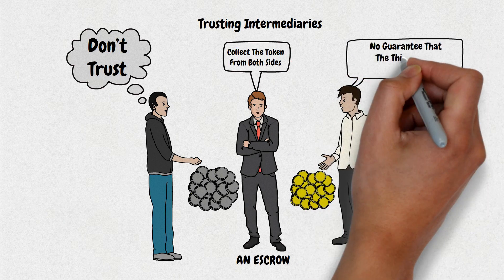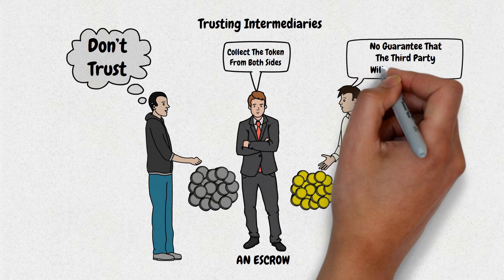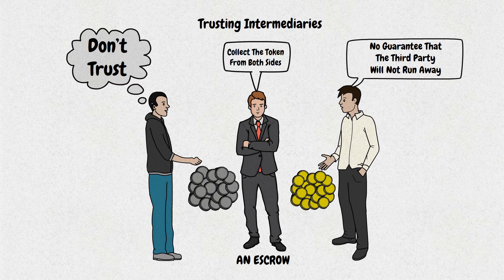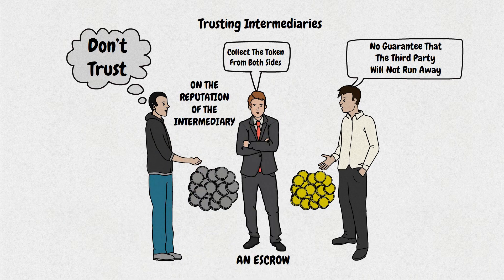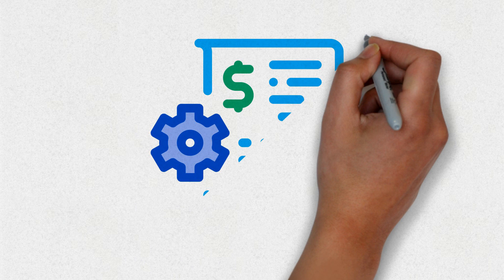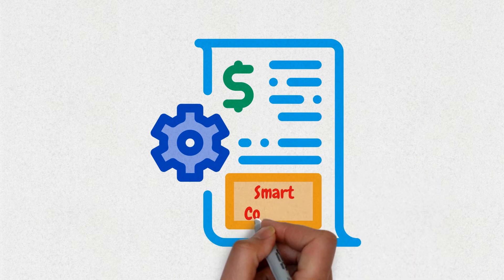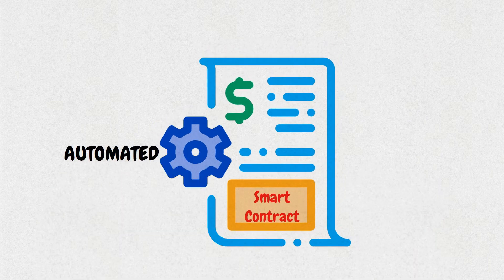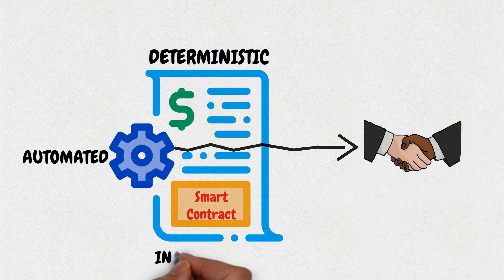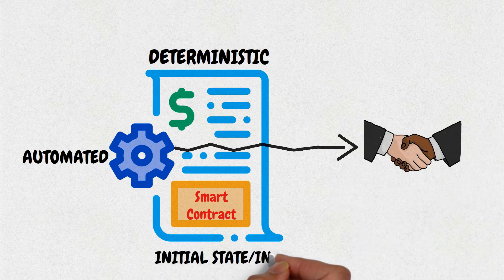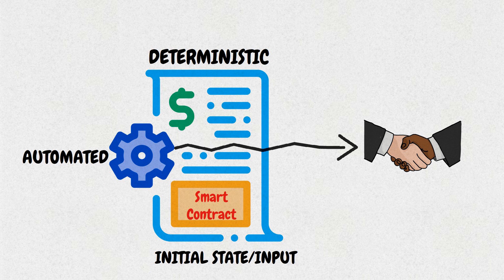This approach already shows some problems. Trusting intermediaries: there is no guarantee that the third party will not run away with the tokens, and both sides should rely entirely on the reputation of the intermediary. On the other hand, a smart contract will work in a fully automated and deterministic way, meaning the same output will be generated from a given initial state or input, making sure both parties receive their tokens when meeting the criteria.